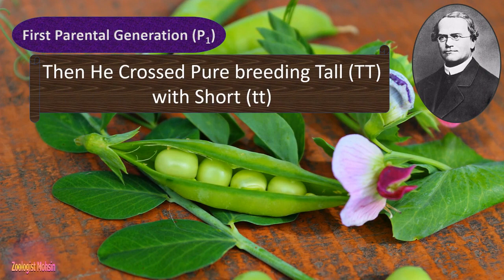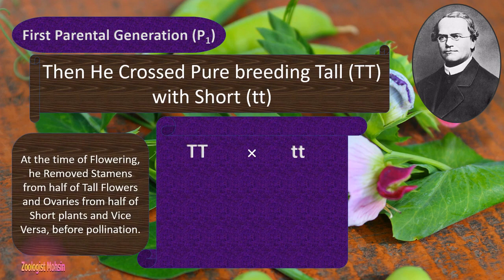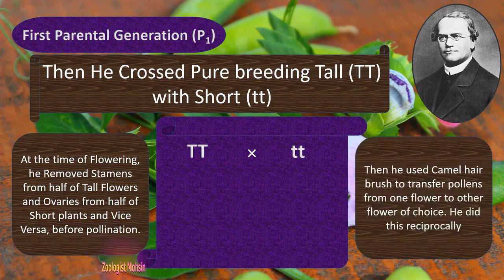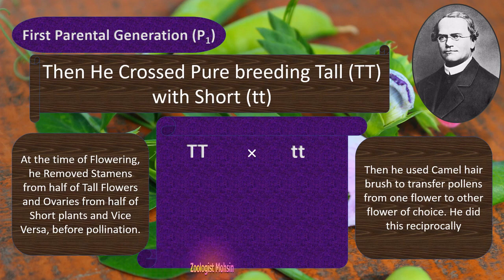When these generations were ready, he crossed pure-breeding tall with short in the first cross. At the time of flowering, he removed stamens from half of the tall flowers and ovaries from half of the short plants, and vice versa, before pollination. Then he used a camel hair brush to transfer pollen from one flower to another of choice. He did this reciprocally to nullify the effect of one allele on the other.